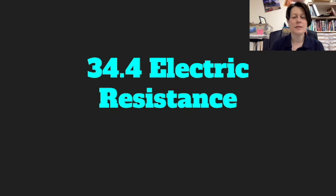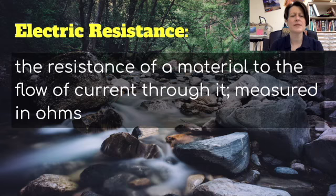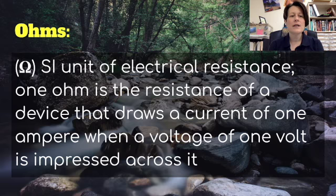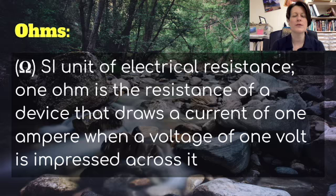Let's first talk about electric resistance. Electric resistance is the resistance of a material to the flow of current through it, measured in ohms. If we look at a stream flowing, there is some resistance to the flow of the stream by the rocks. And so electricity — the flow of electrons — also has some resistance. Ohms, which uses the capital Greek letter omega as its symbol, is the SI unit of electrical resistance. One ohm is the resistance of a device that draws a current of one ampere when a voltage of one volt is impressed across it.